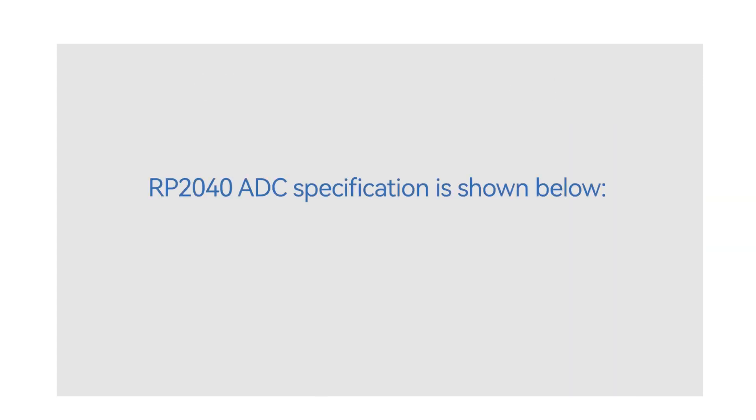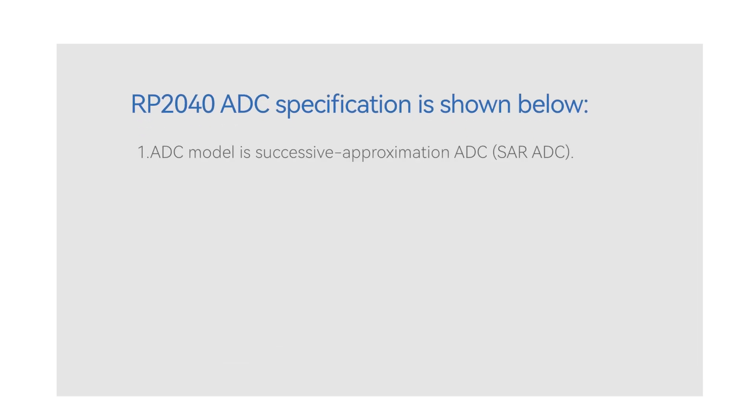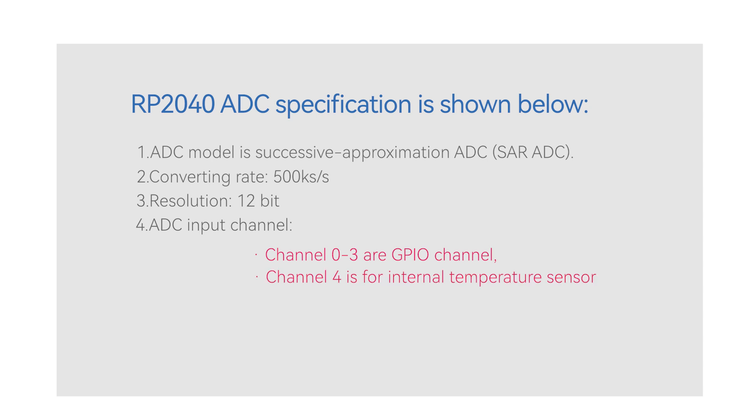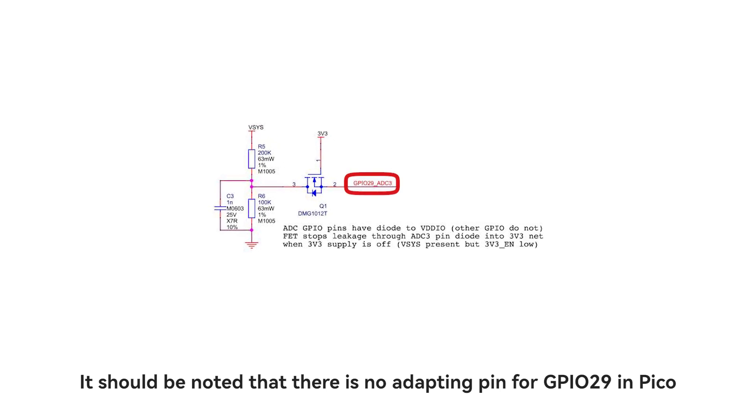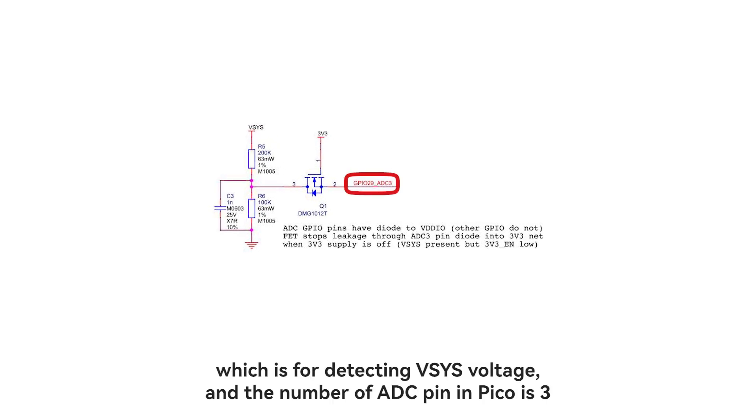RP2040 ADC specification is shown below. 1. ADC model is Successive Approximation ADC, 2. Converting Rate, 500KS/S, 3. Resolution, 12-bit, 4. ADC Input Channel. Channel 0-3 are GPIO channels. Channel 4 is for Internal Temperature Sensor. It should be noted that there is no adapting pin for GPIO29 in PICO, which is for detecting VSYS voltage, and the number of ADC pins in PICO is 3.